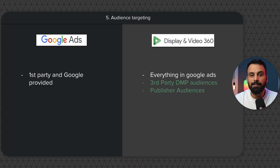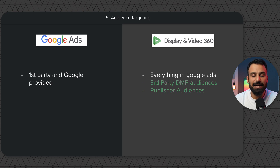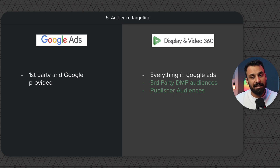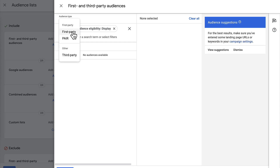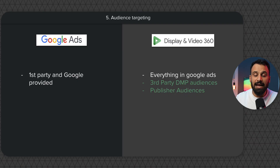The fifth point is audience targeting. In Google Ads you can reach first-party audiences — retargeting pixels and website audiences — plus Google-provided audiences like affinity and in-market segments. In DV360, you have access to all of that plus third-party DMP audiences, which offer very niche targeting, for example people interested in a particular car, people with a particular monthly income, or people looking for specific lawyers. These DMPs have very high-quality audience data.